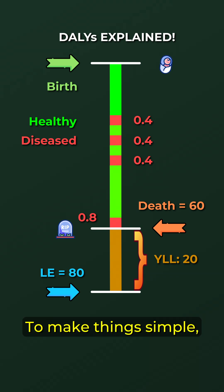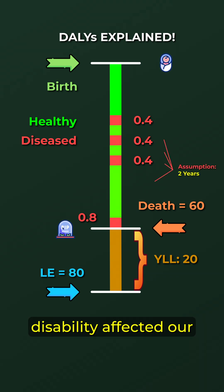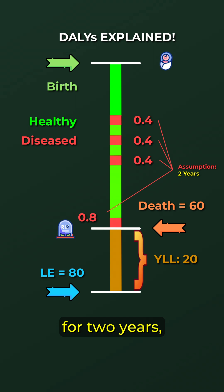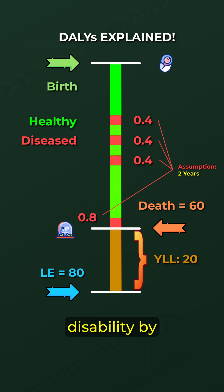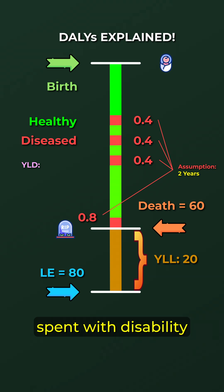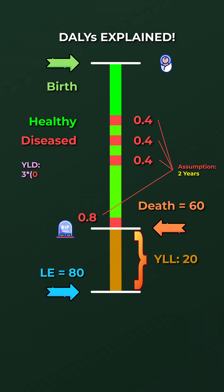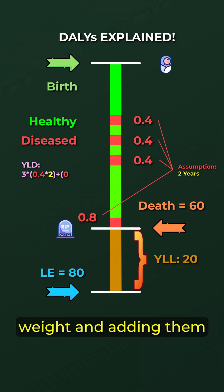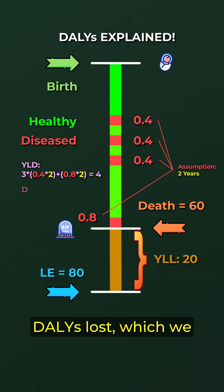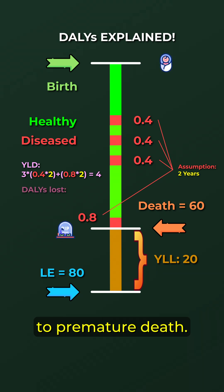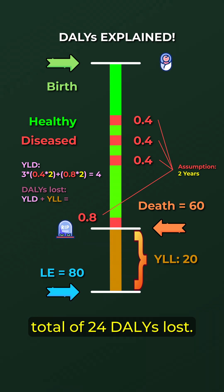To make things simple, let's say all periods of disability affected our individual for 2 years, which lets us calculate the years of healthy life lost due to disability by multiplying the time spent with disability with the disability weight, and adding them all up at the end. This would give us 4 DALYs lost, which we can combine with the years of life lost due to premature death.